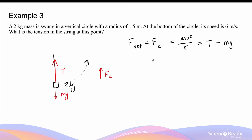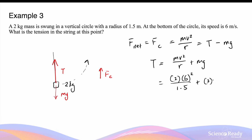Making tension the subject: T equals mv² over r plus mg. The mass is 2 kilograms, speed is 6 m/s squared, divided by the radius of 1.5 meters, plus the weight force of 2 kilograms times 9.8. This gives a tension magnitude of 67.6 newtons, directed upwards at the bottom of the vertical circle.